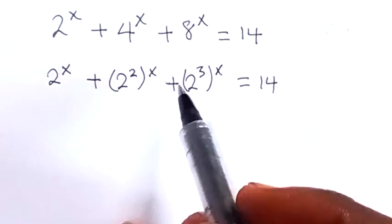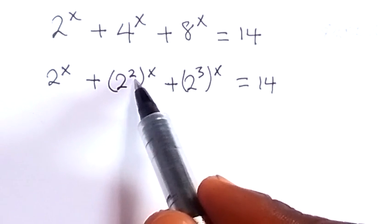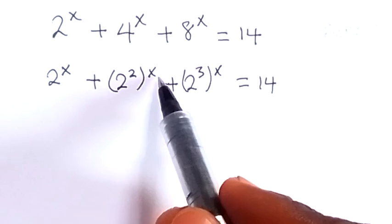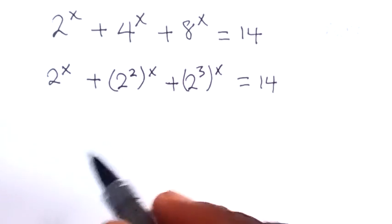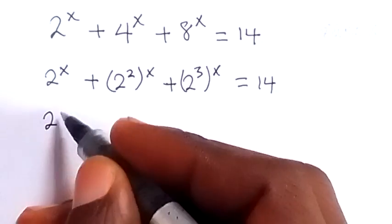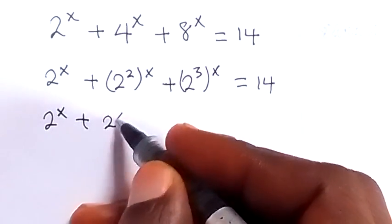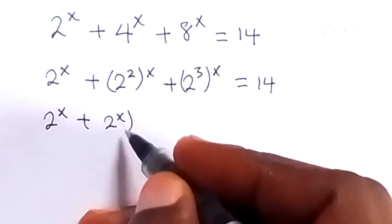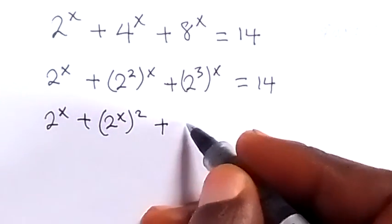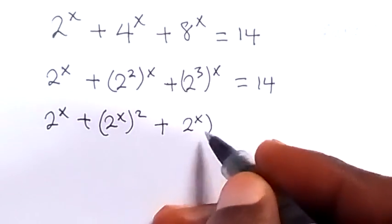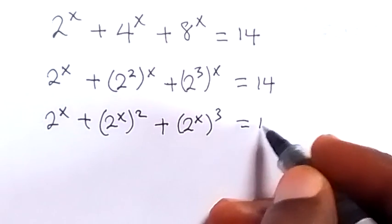From here we can write this again, taking x inside and the 2 outside, also taking x inside with the 3 outside. So we have 2 raised to power x, plus 2 raised to power x all raised to power 2, plus 2 raised to power x all raised to power 3, equals 14.